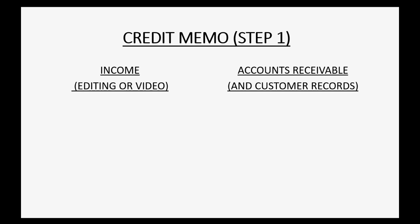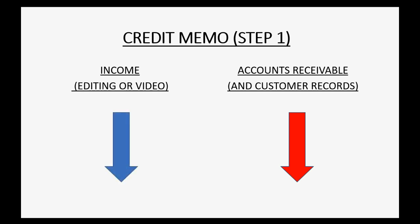After we do step one, the accounts receivable and the customer records for Betty will decrease — it will be a negative number, almost as if we owe her money. But again, it's only after step one. Most importantly, the related income account will go down. Invoice number two had 10 editing hours, so editing income will decrease by $1,400 and accounts receivable will decrease by $1,400, as well as Betty's balance.